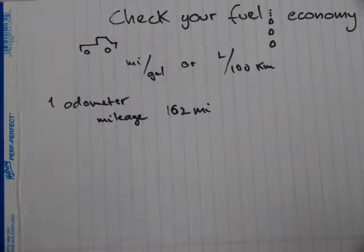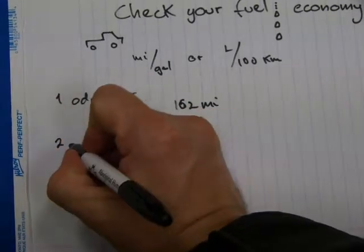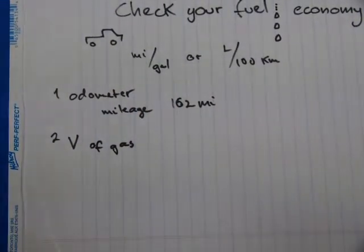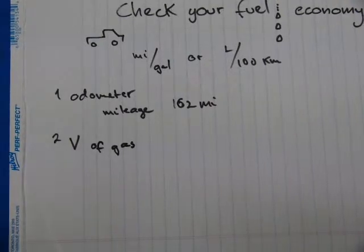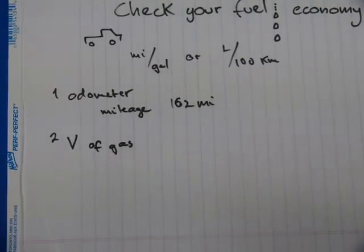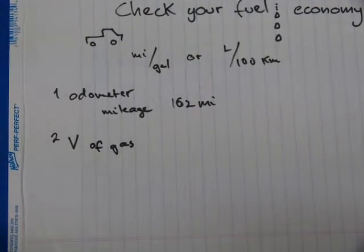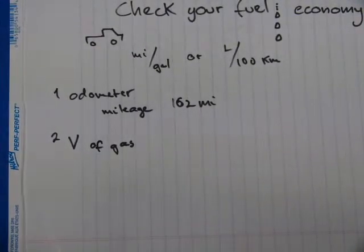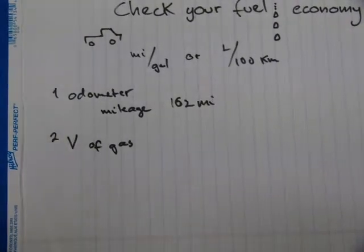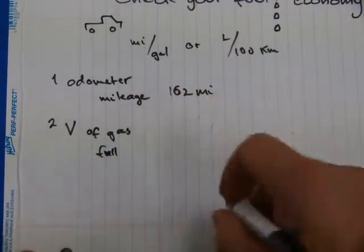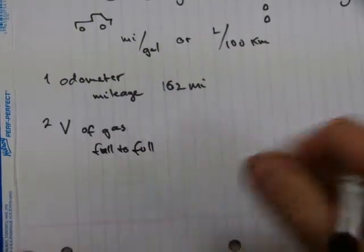The second piece of information that you need is the volume or amount of gas that your vehicle consumed over the same 162 mile distance. To do that, it is probably the best thing to do is to go from full tank to full tank again. Because if it's not full, it's really hard to get started from half a tank, consume some of the gas, and then refill it to exactly the same level. It's not happening, so the best thing to do is to go from full tank to full tank.